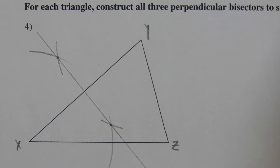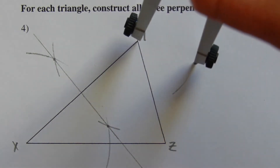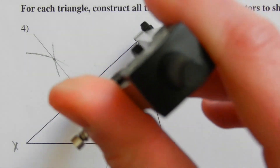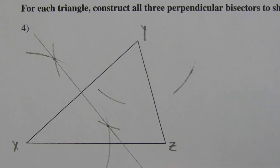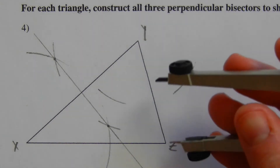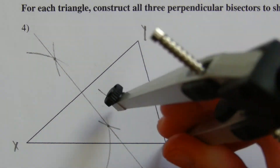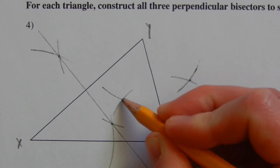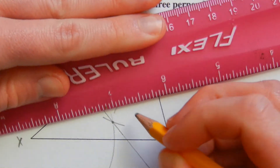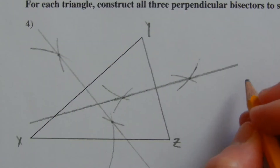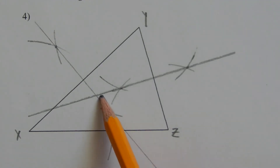Now I'll do the perpendicular bisector of YZ. To the right of the line I'll make a mark, and to the left I'll make a mark. Keeping that same measurement, I'll do the same from endpoint Z. Now that I have my intersections I'll draw that perpendicular bisector.